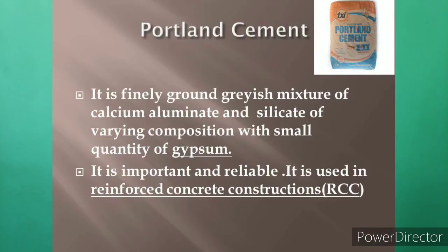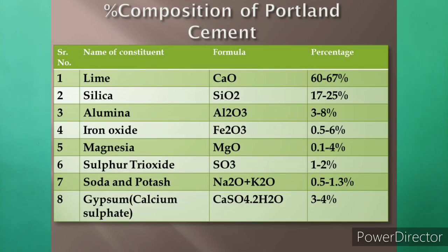Next is Portland cement. It is a grayish cement which contains calcium aluminate and calcium silicate of varying composition, with a small quantity of gypsum, and which is capable of setting and hardening to form concrete. Portland cement is the most important cement because it is used in RCC structures.